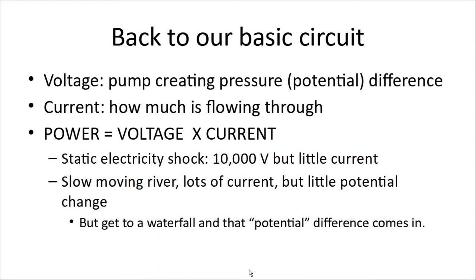So back to our basic circuit. Voltage is a pump creating the pressure or potential difference. Current is how much is flowing through. And power is the combination of the two — voltage times current. That's one of the two big math formulas you're going to have to remember. The power is what really dictates the danger. A static electricity shock is about 10,000 volts, but it doesn't have much current — hardly any at all. And so that little shock hits the back of your neck and goes nowhere — you feel it on the skin, but there's not enough current to flow through your body.